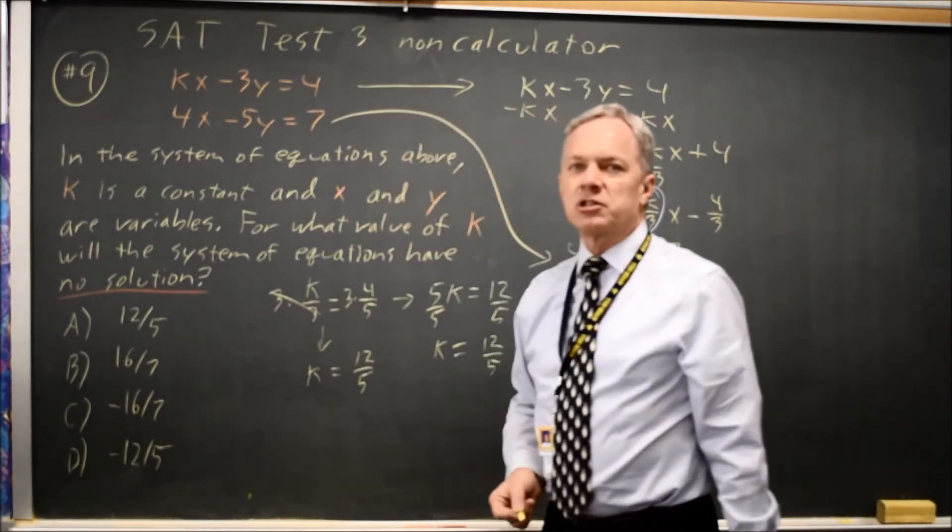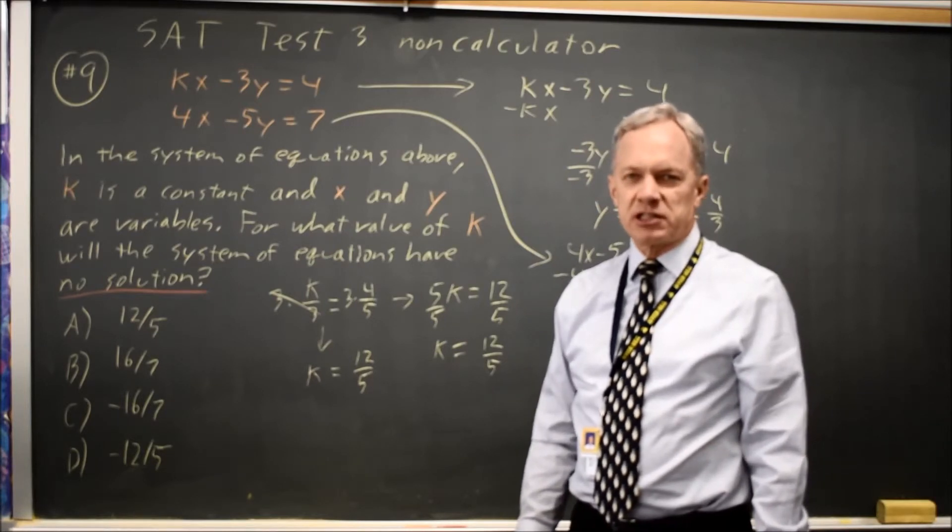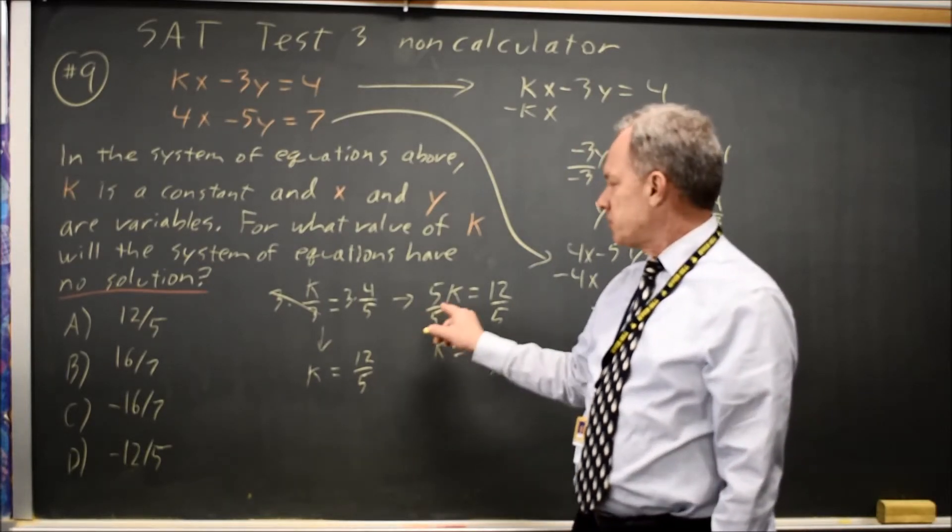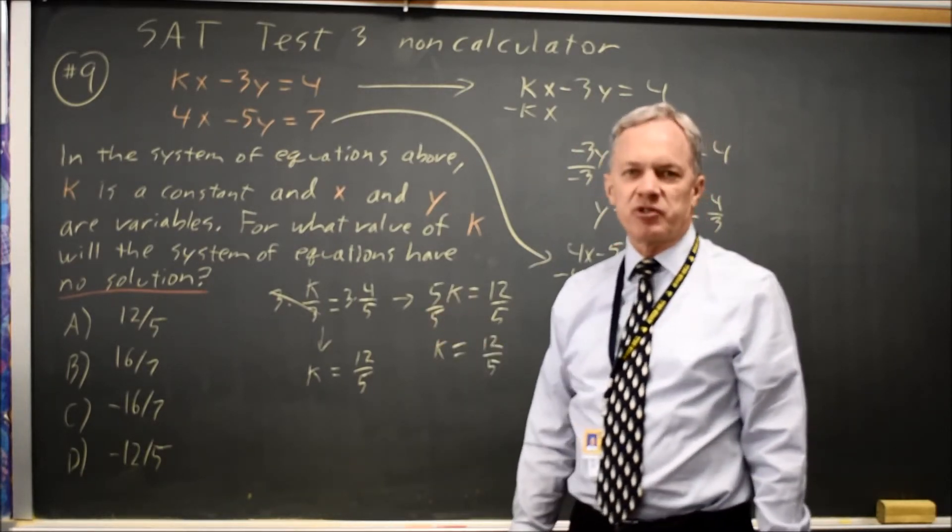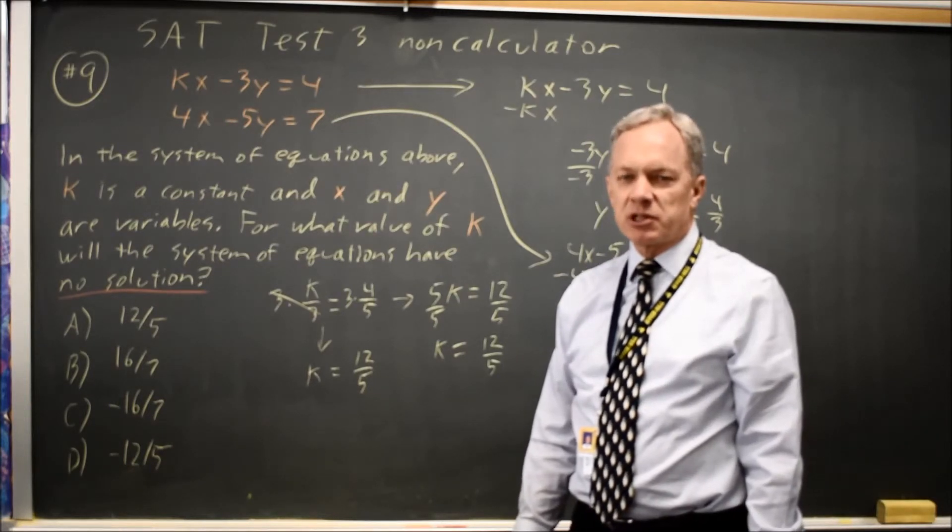For many of us, we're so comfortable with cross multiplying fractions that we'll want to go that route first and then to get k by itself, we divide by 5. But both methods provide you with the correct answer.